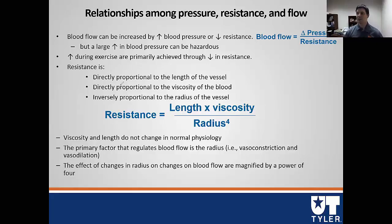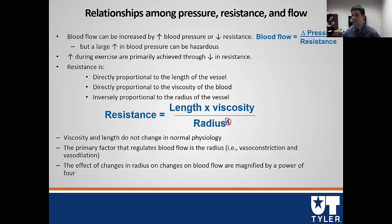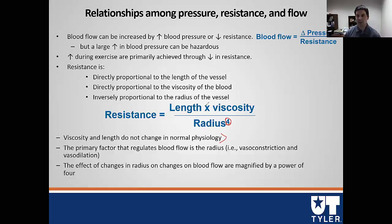Resistance has a complex formula — you don't need to memorize it. It's proportional to the length of the vessel and the viscosity of the blood, divided by the radius raised to the fourth power. Length and viscosity don't really change in normal physiology — our arteries aren't getting longer, and blood viscosity stays about the same. In normal healthy physiology at rest in homeostasis, both of these are essentially constants.